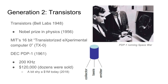Based on the TX-0's design, DEC produced an important machine called the PDP-1 in 1961, pictured here. This was an extremely advanced machine — you can see a video game called Spacewar being played on it. The PDP-1 had an amazing speed of 200 kilohertz, but was costly at around $120,000 — equivalent to a little less than a million dollars in 2018 — and only many dozens were sold.